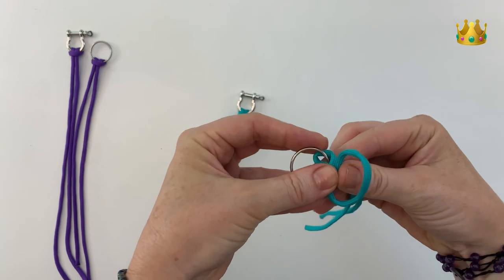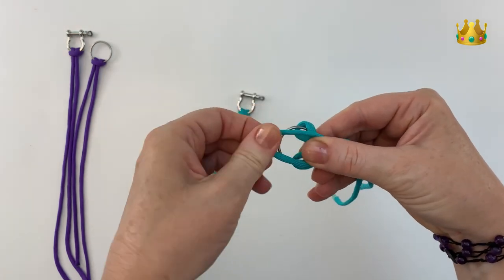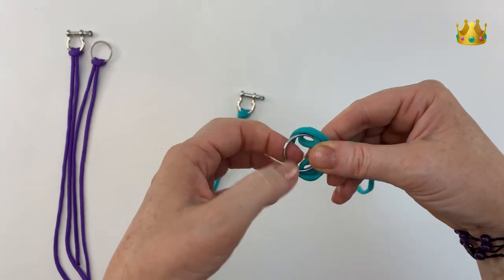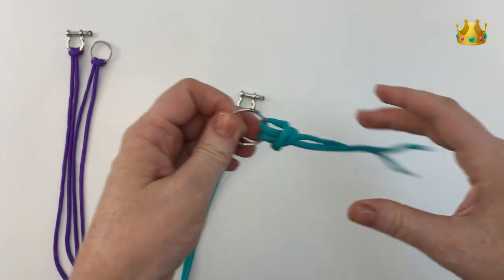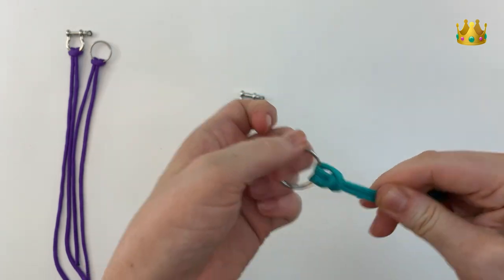I just hold it inside the loop with my thumb there and then bring this loop back over the key ring. Pulling it all down nice and tight and working those threads so that they're sitting nice and tidy and in the right position.